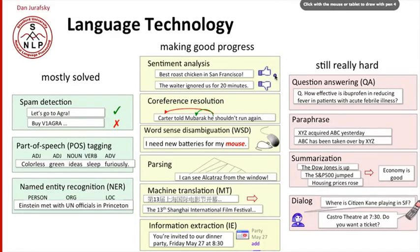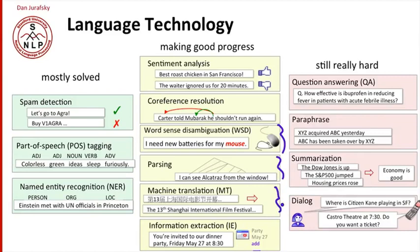We talked about sentiment analysis — the task of deciding thumbs up or thumbs down on a sentence or a product. Component technologies like word sense disambiguation — deciding if we're talking about a rodent or a computer mouse when people talk about mice in a search. We'll talk about parsing, which is good enough now to be used in lots of applications, and machine translation usable on the web. A number of applications, however, are still quite hard. For example, answering hard questions like how effective is this medicine in treating that disease — by looking at the web or summarizing information — is quite hard. Similarly, detecting that two phrases or sentences mean the same thing — the paraphrase task — is still quite hard.